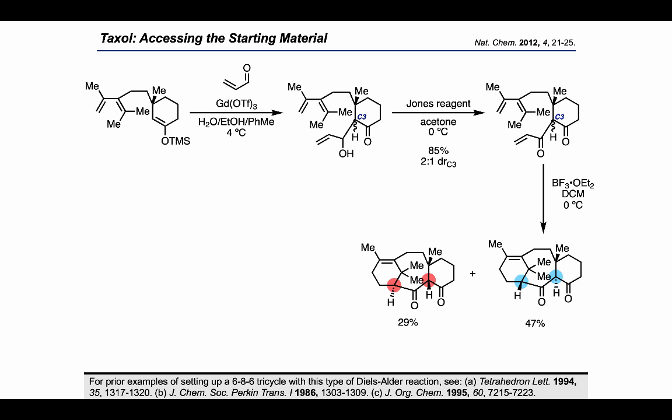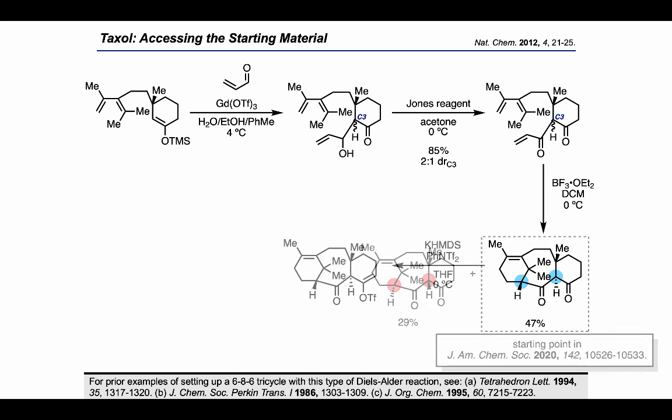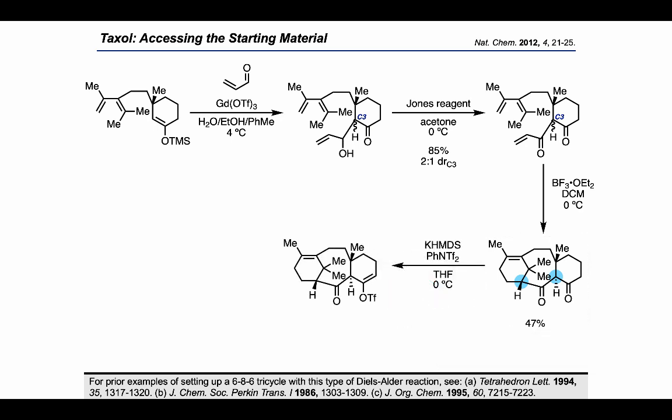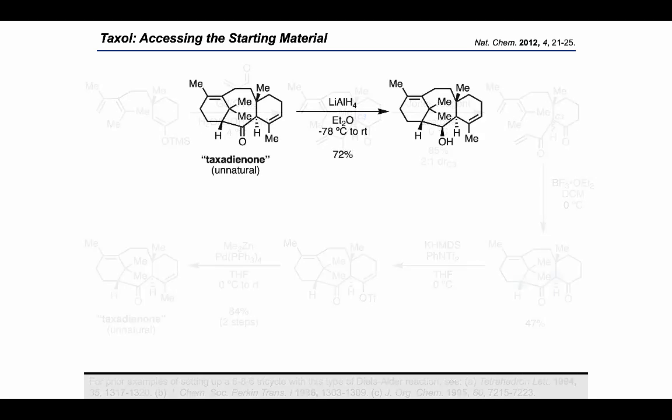Subsequently, treatment with ethereal BF3 allowed an intramolecular Diels-Alder reaction to proceed, giving two products. The product on the right ended up being the starting point for the two-phase synthesis of taxol, as we'll see later. For now, using KHMDS and bis-triflylaniline, the authors converted the ketone on the right into an enol triflate, which they engaged immediately in a Negishi coupling with dimethylzinc to form the trisubstituted alkene present in taxadienone.